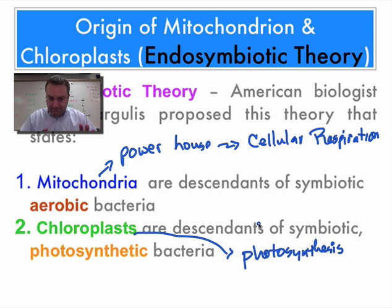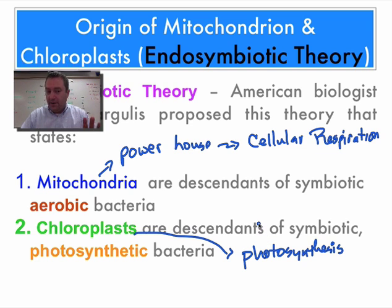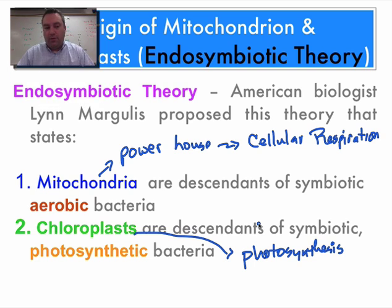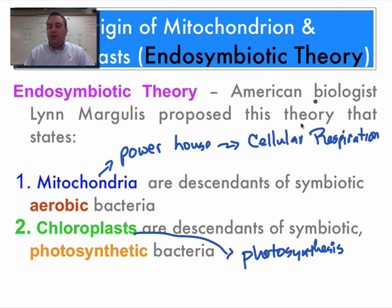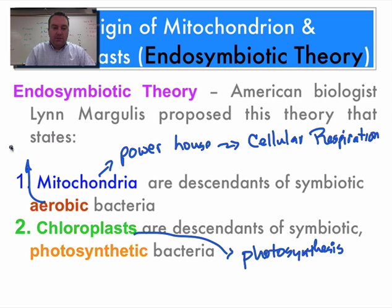The endosymbiotic theory was created by an American biologist in the 20th century named Lynn Margulis, and she stated that mitochondria were the descendants of symbiotic aerobic bacteria. Aerobic means that you're using oxygen.